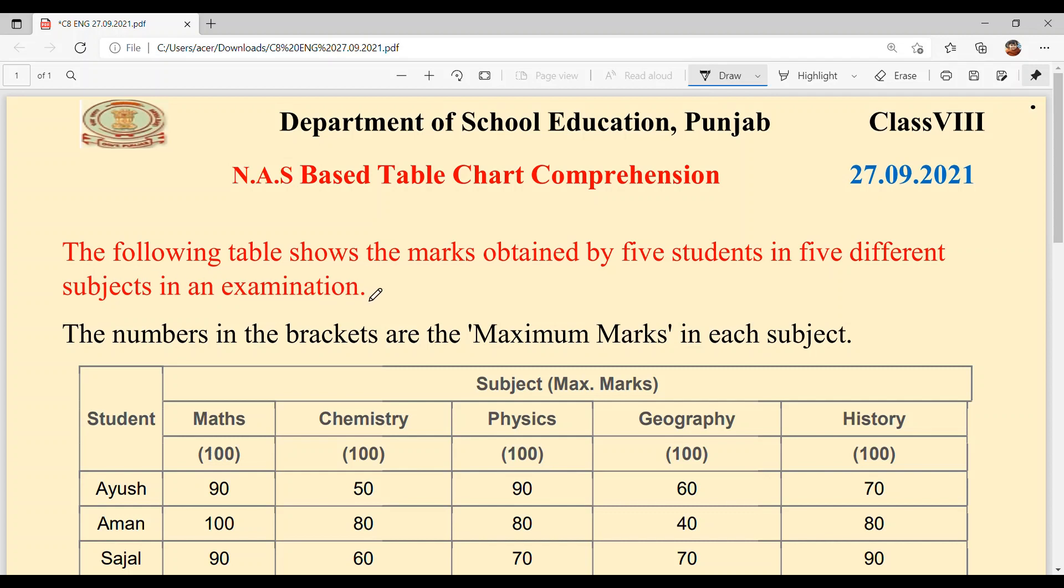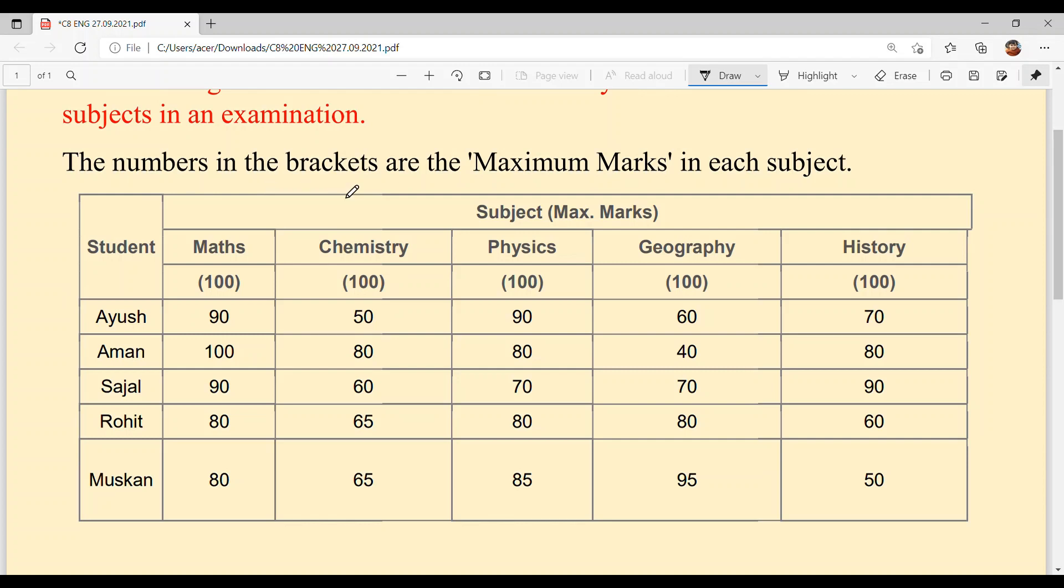The numbers in the brackets are the maximum marks in each subject. Each subject has 100 marks, and there are 5 subjects, so total marks are 500. Now look at the table - the names are in the first column. The second main column has the subjects, and the maximum marks for each subject are shown in brackets. Below that, they have written the marks obtained by each student.